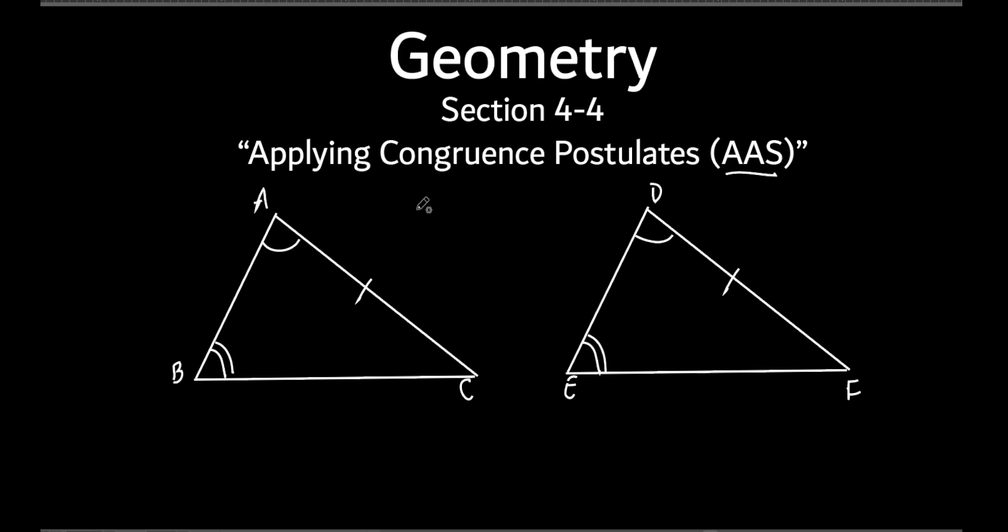Look. If these two angles are equal to these two angles, what must be true about C and F? They've got to be equal to each other. Because you're taking the same two things away from what? 180. That's right. Everybody see that?